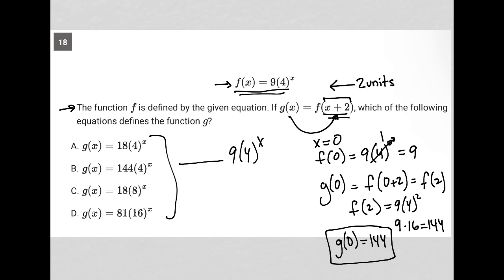If I replace x with 0 in choice A, I'd have 4^0, which is 1, and that would turn into 18 times 1. That's not 144, so A is eliminated.